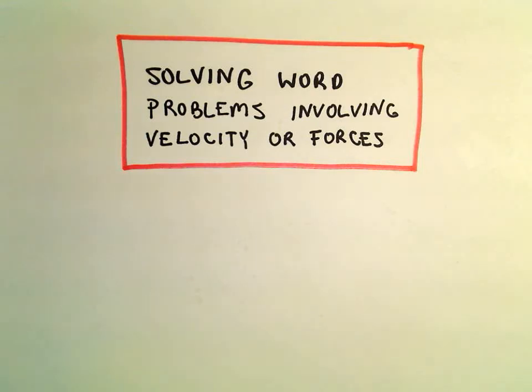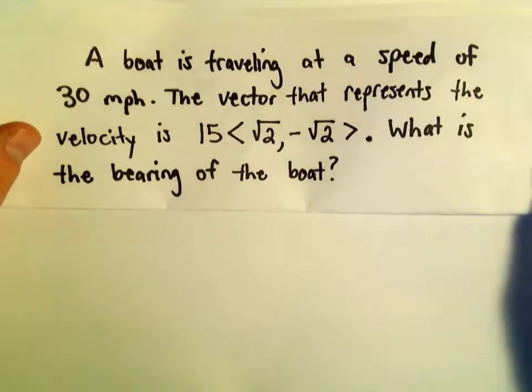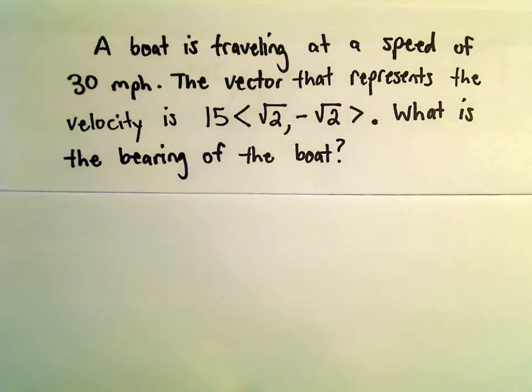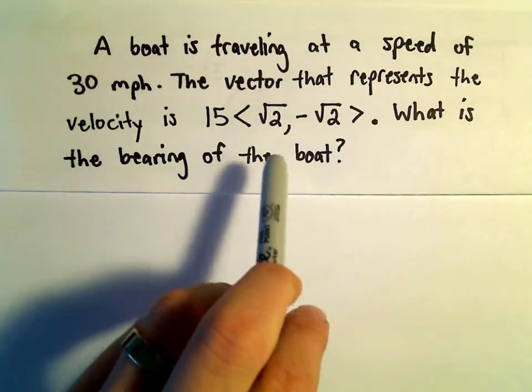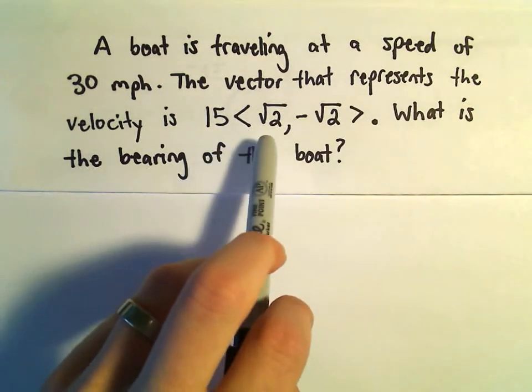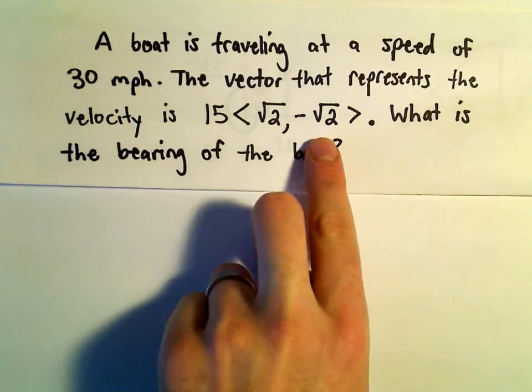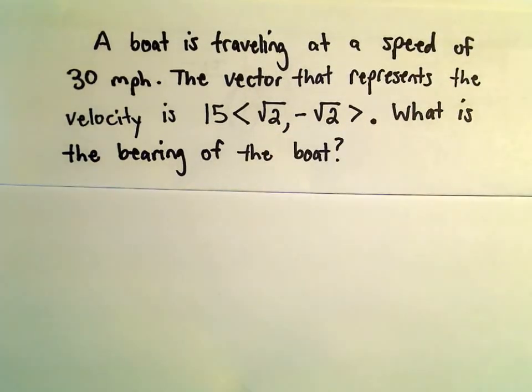Alright, in this video I want to do some word problems involving velocities or forces. In this case we're going to have a boat that's traveling at a speed of 30 miles per hour. And the vector that represents that velocity is 15 multiplied by the vector with components root 2 comma negative root 2. We want to know what is the bearing of the boat.